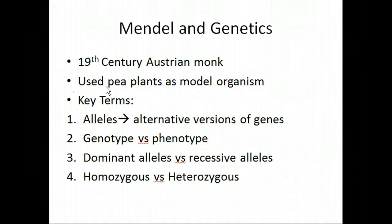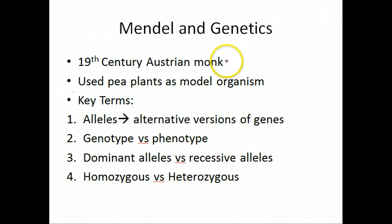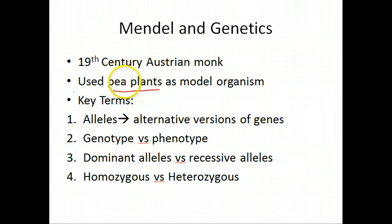To start off with genetics, you really can't have a discussion of Mendelian genetics without talking about Gregor Mendel, that famous 19th century Austrian monk. He had a real devotion to science — not only did he establish the field of genetics, but he was also a devoted astronomer and meteorologist. His model organism was a pea plant, and since he had a garden in the back of the monastery, using plants just made sense.